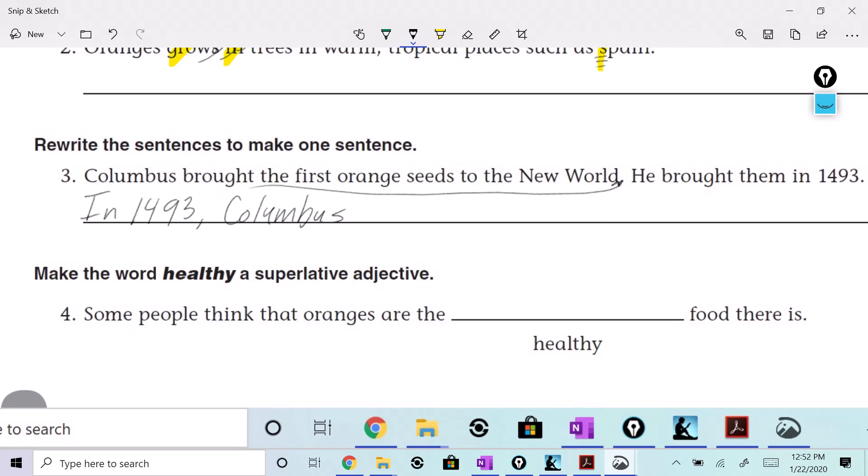Make the word healthy a superlative adjective. Guys, what is the superlative ending? What is it? E-S-T. E-S-T. Yes. E-S-T. I like that. Someone said est. Yeah, you're right. E-S-T. All right. So, but we have the rule of Y. H-E-A-L-T-H-Y. What's that that comes before the Y? So, we're going to drop the Y. Add I, then E-S-T. So, some people think that the oranges are the healthiest food there is.